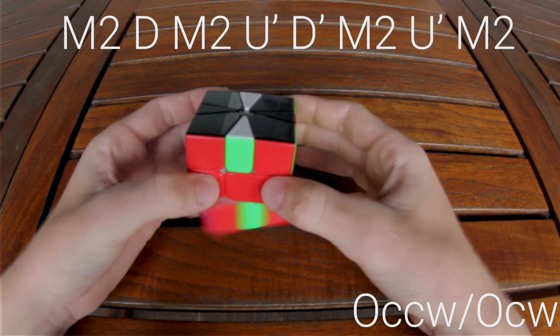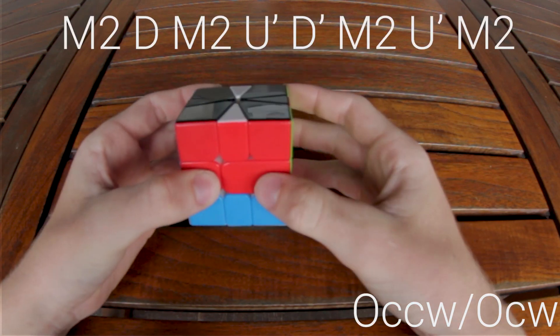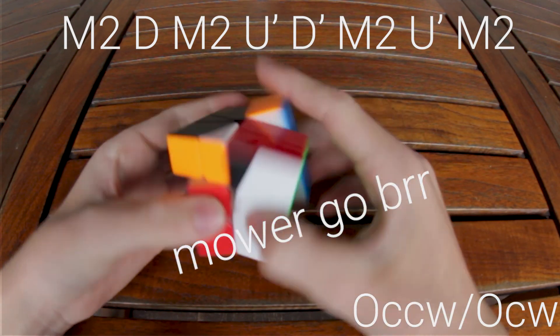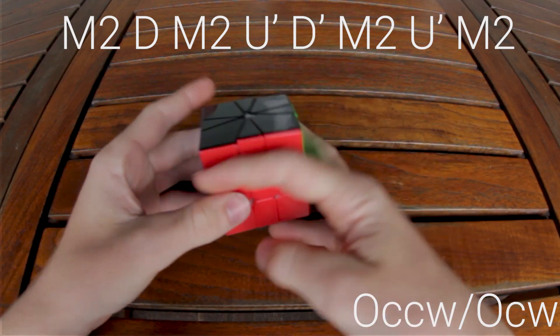So you do M2, D, M2, U prime, D prime, M2, U prime, M2, AUF.